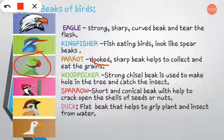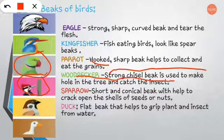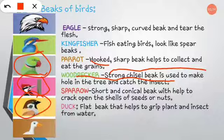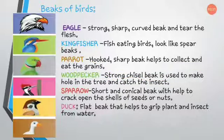Next bird is woodpecker. The woodpecker's main work is to make holes in the wood of the tree, and inside that wood they find insects and eat them. The strong chisel beak is used to make holes in the tree and catch insects. Next bird is sparrow. Sparrow has a short and conical beak, which helps to scrape open the shell of seeds or nuts. Next bird is duck. Duck has a flat beak that helps to grip plants and insects from water. These are the different birds with different types of beaks.